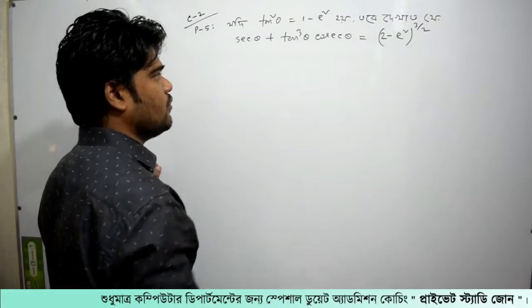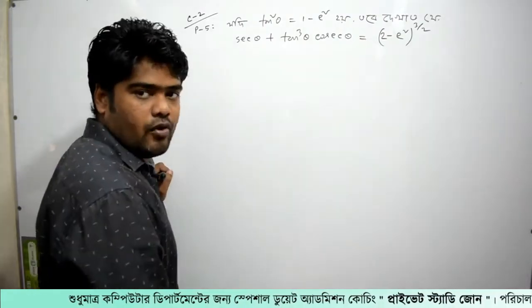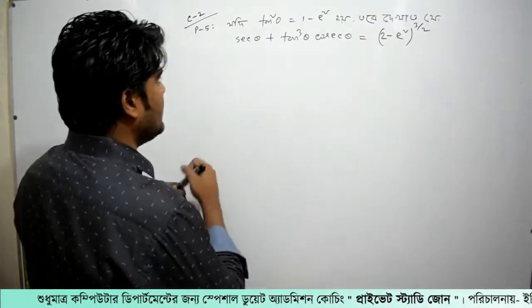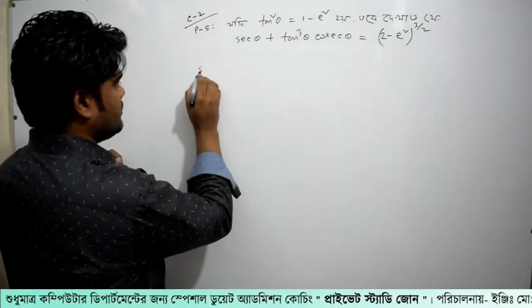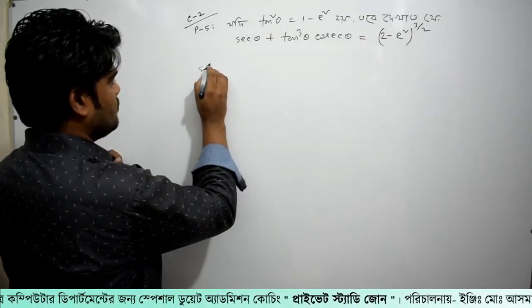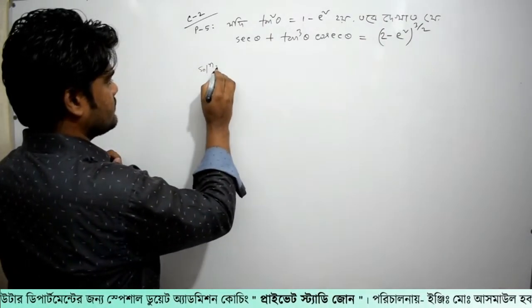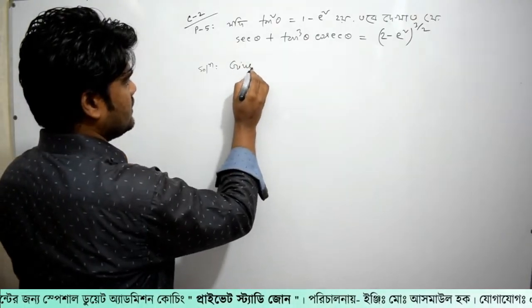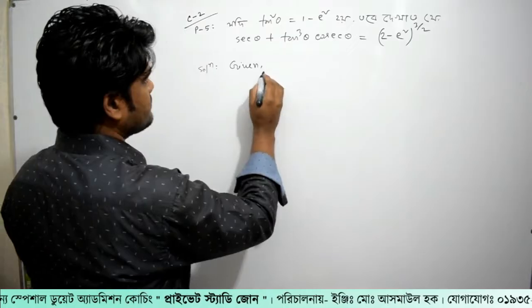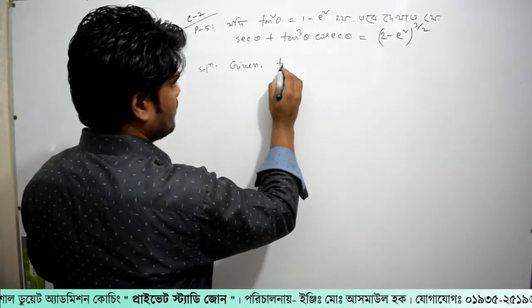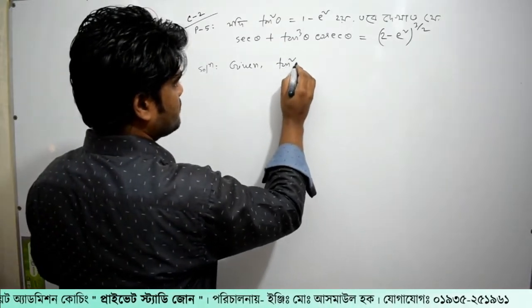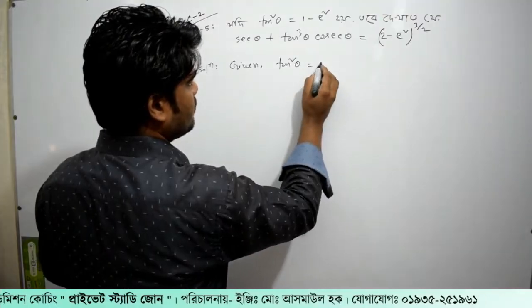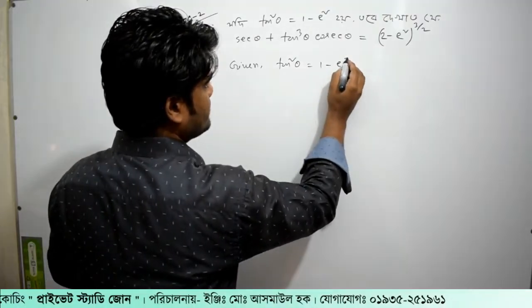If you want to see the answer here, you will find the answer here. The solution is given the data — given the data as a given — tan square theta is equal to 1 minus square.